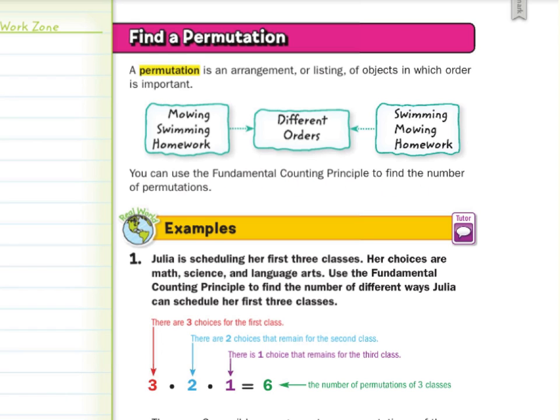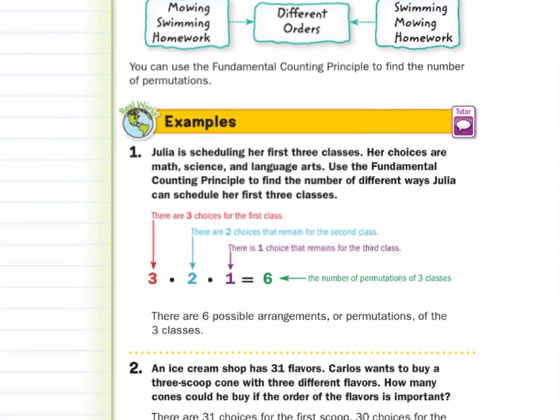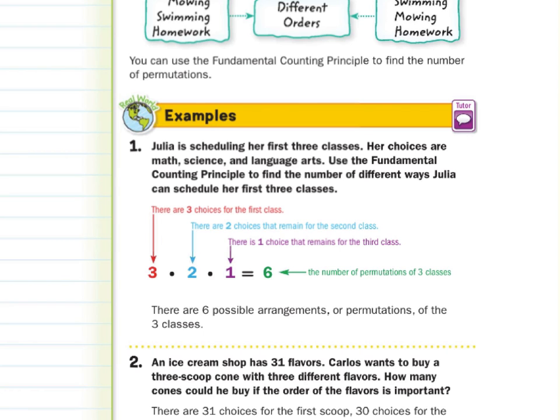You can use the fundamental counting principle to find the number of different ways Julia can schedule her first three classes. Her choices are math, science, and language arts. Well, let's think about the first class. How many choices does she have? Three. For the second class, how many choices does she have? Two. How many choices does she have for her last class? One. And if we multiply three times two times one, we get six. So there's six possible arrangements or permutations of the three classes.